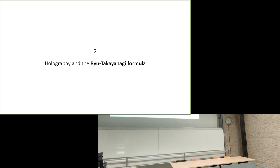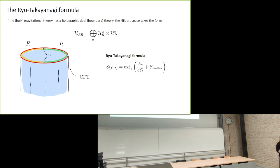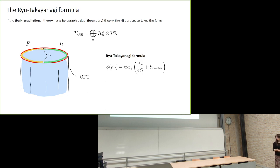If the gravitational theory has a holographic dual theory living on the boundary — as in AdS/CFT correspondence — the Hilbert space decomposes into a direct sum of factors over the two regions. There is then a sense in which we can talk about the subsystem associated to R and R-bar, and the Ryu-Takayanagi formula gives an entropy for this region related to the area of some extremal surface in the bulk. The interpretation of this entropy is clear from the boundary theory: it computes the entropy of a spatial region in the CFT.